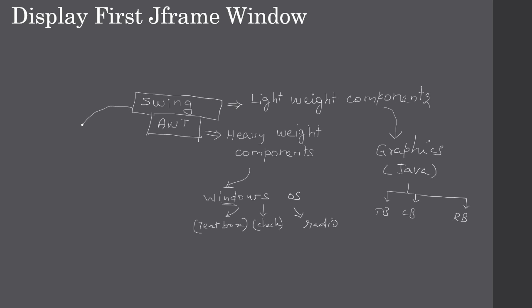Swing component names start with 'J'. For example, Frame is an AWT component, and JFrame is the Swing component. Likewise there are many components — for example, Label is AWT's Abstract Windowing Toolkit component, and if you see a 'J' in front, JLabel is the Swing component.